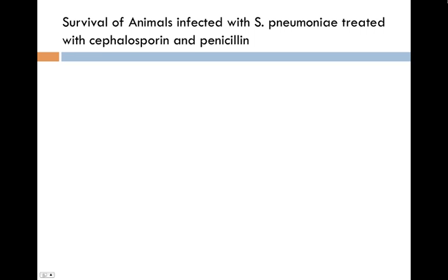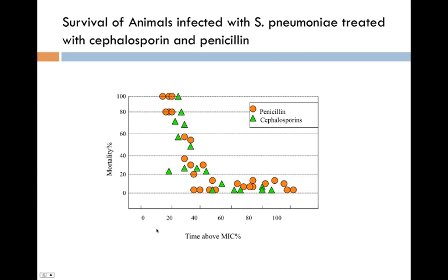It's nice to see colony-forming units go down, but what about survival? With Strep pneumoniae treated with cephalosporins and penicillin — beta-lactams — time over the MIC is what matters. As we increase the percentage of time that the patient is above the MIC, mortality goes from 100% down to 0%. Once you're at 60% or higher, you've pretty much assured that your patient will survive. These are beta-lactams — not surprising — time-dependent killers. What's most important is making sure concentrations remain above the MIC during the dosing interval.